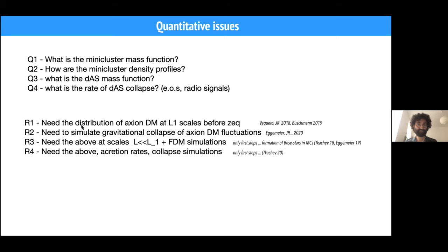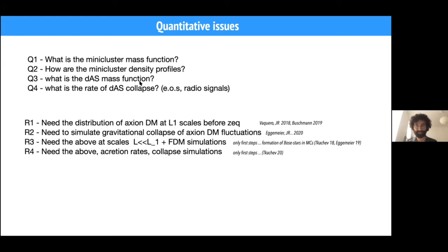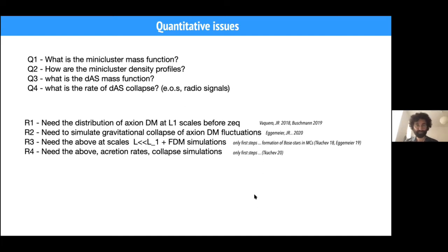First we need to know the distribution of axion dark matter, then simulate the gravitational collapse — which has been done and presented this year in a PRL paper with AMI et al. If we want to do dilute axion star physics, we need even more simulations. In order to study the formation of dilute axion stars, we need to know the distribution and do simulations of their formation. What we know so far is that they form in some cases in axion mini clusters, and also they can collapse if the axion coupling to photons is relatively large. But still no information about the mass function of these objects.